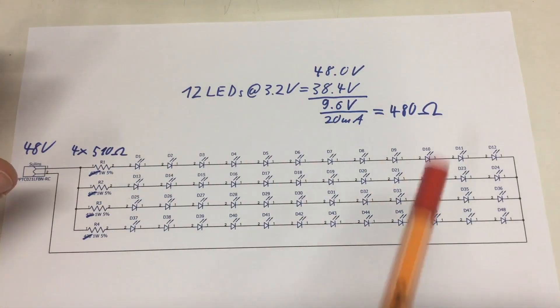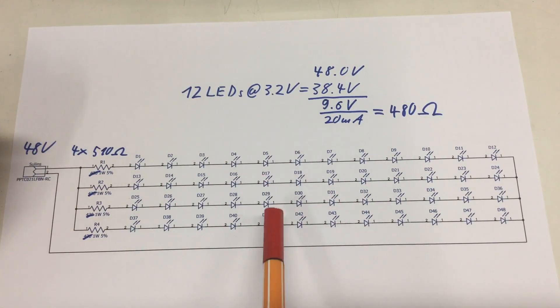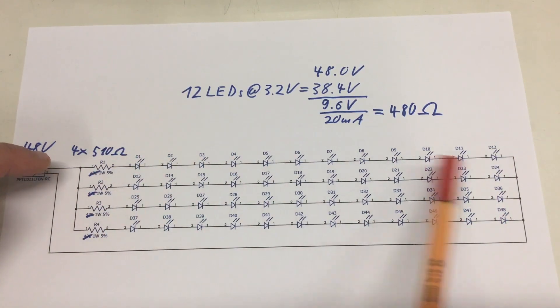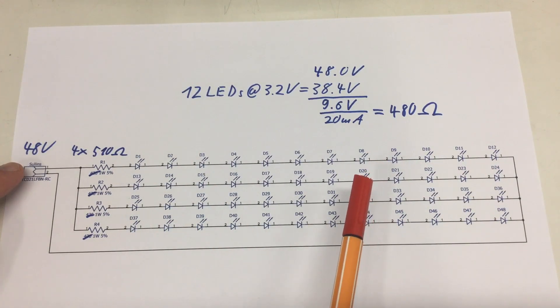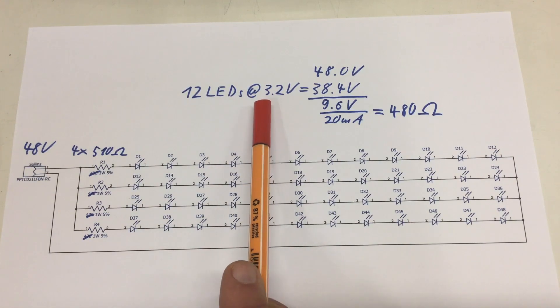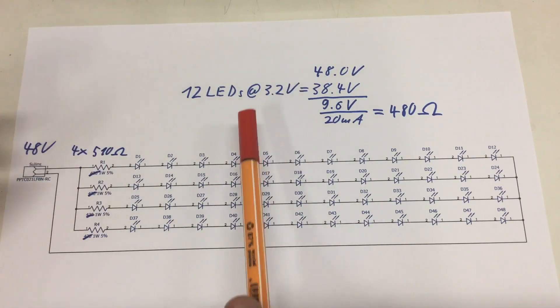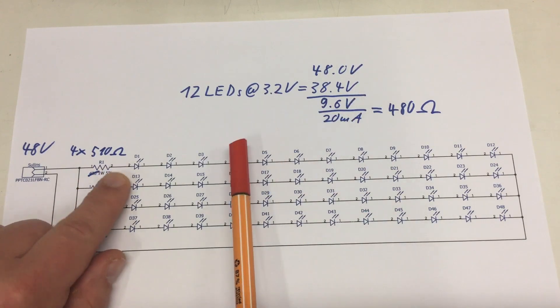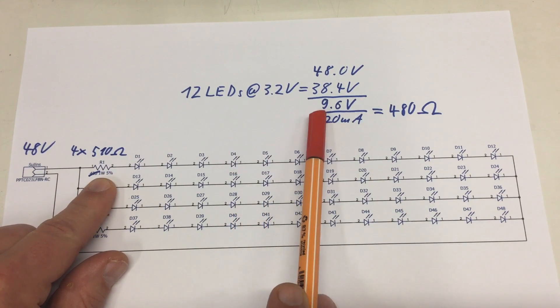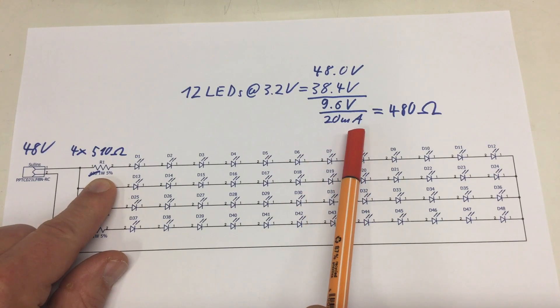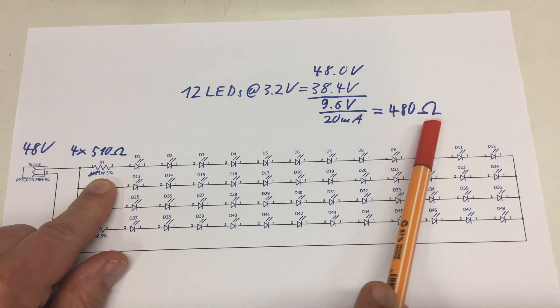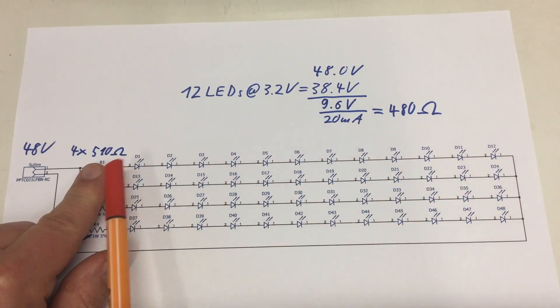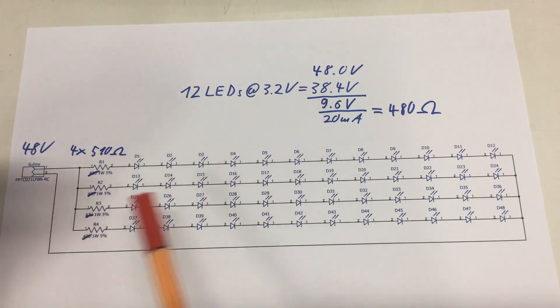That's how the LED boards look today. Four strings of LEDs, 12 LEDs each with a little series resistor limiting the current. 48 volts go in and 12 LEDs in a string. Each LED 3.2 volts makes a total voltage of 38.4 volts, means I have to drop over the resistors 9.6 volts. Driving the LEDs at 20 milliamps, I come to 480 ohms and I built in 510 ohms, so these should run a little under 20 milliamps just to be on the safe side.